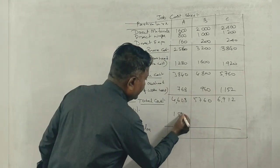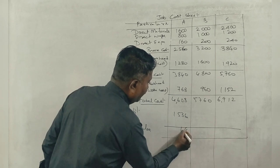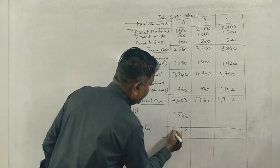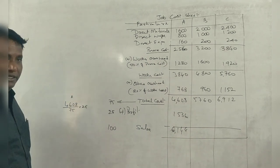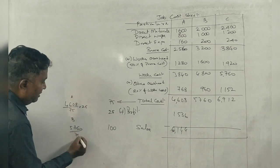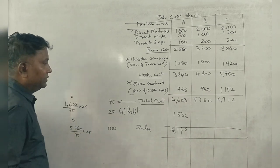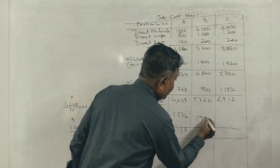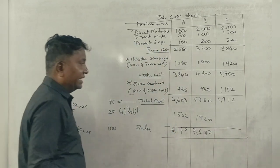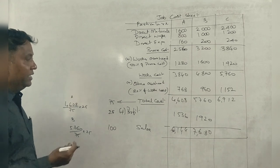6,144 rupees for sales. If 5,760 is for 75%, what is for 25%? 1,920. Total 7,680. Correct.